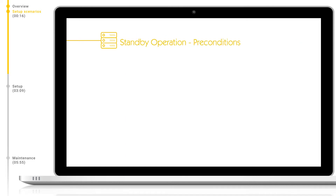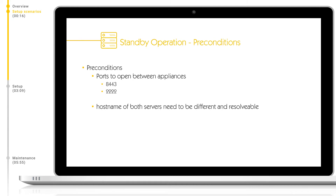To set up a standby appliance, certain preconditions must be met. Firstly, after each appliance is racked and networked, the ports 8443 and 2222 must be open and visible between the appliances. Additionally, the host names of the servers must be unique and resolvable. Once we have met these prerequisites, we can configure this directly in the MindBreeze Management Center. As an example,